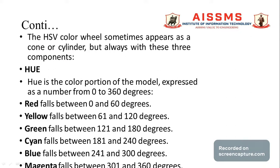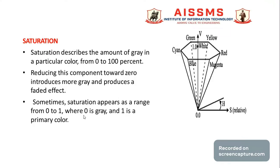The first component is hue. Hue is the color portion of the model, expressed as a number from 0 to 360 degrees. Red falls between 0 and 60 degrees, yellow between 61 and 120 degrees, green between 121 and 180 degrees, cyan between 181 and 240 degrees, blue between 241 and 300 degrees, and magenta between 301 and 360 degrees.